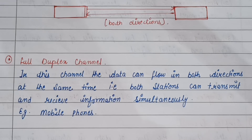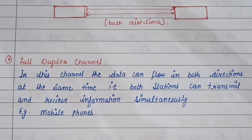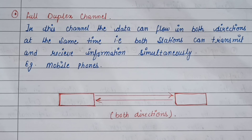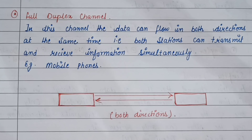Example hai mobile phone. Jaise ki mobile phone mein hum baat kar sakte hain, to hum data ko receive bhi kar sakte hain aur data ko transfer bhi kar sakte hain. Iske diagram mein hum dekh sakte hain ki jo data hai, wo dono directions mein flow kar raha hai — yani jo stations hain, wo data ko receive bhi kar rahe hain aur transmit bhi kar rahe hain.